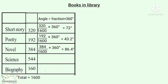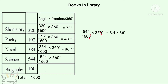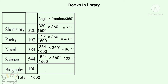Now we have to write the angle of Science. The total is 1,600 books — that is 544 books. So the angle is 544 by 1,600 into 360 degrees. The zeros cancel. This becomes 3.4 into 36 degrees, that is 122.4 degrees.